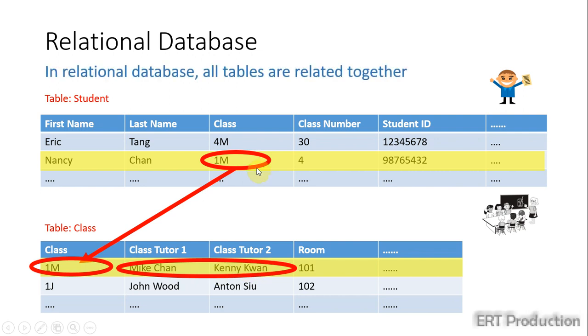Of course, the database server should provide an effective way of finding the answer of the questions of who is the class tutors of Nancy Chen automatically. If the tables of a database are related together, we call this relational database.